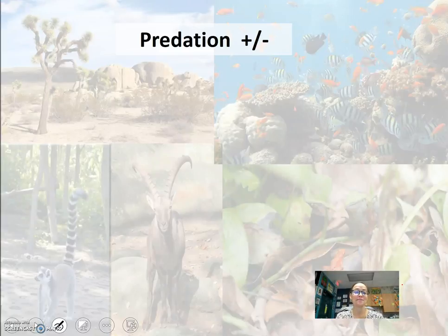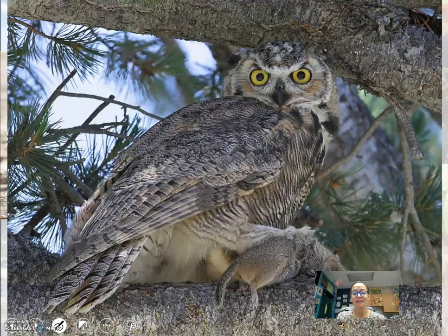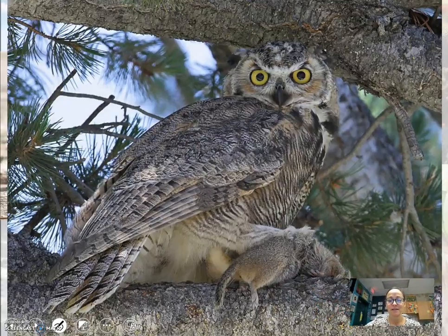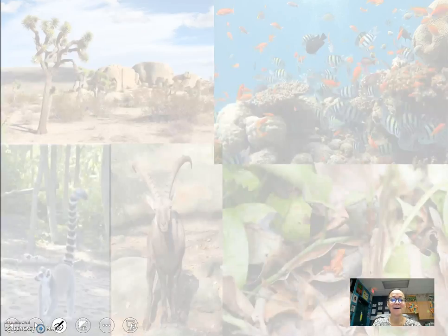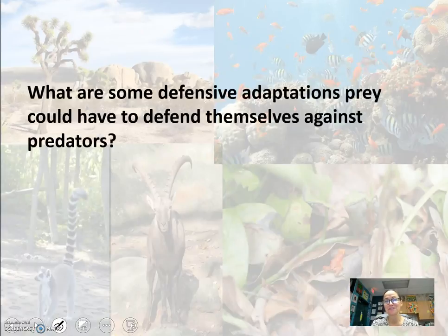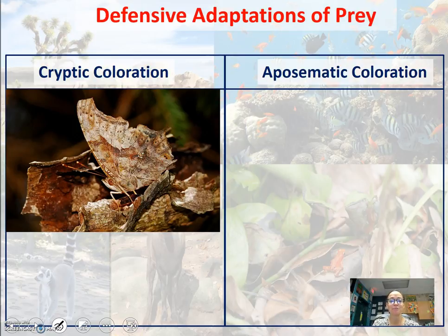Predator-prey relationships. With predation — a wasp eating a fly, an owl eating a squirrel, a hyena eating a zebra — you want to think about what adaptations prey have to defend themselves against predators. One defense could be camouflage, which we call cryptic coloration. So we have defensive adaptations of prey.